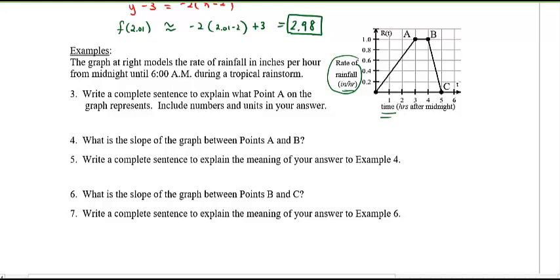So I want you to write complete sentence to explain what point A is on the graph and indicate numbers and units. So if I look at point A, I'm looking at this point right here. We can say that the actual point is 3 comma 1, right? So the point is 3 comma 1, but what does that actually represent? Well, at 3, which would be 3 a.m., what do we know? The y-value is the rate of rainfall. So I'll say the rate of rainfall is 1 inch per hour. Done. So once again, the rate of rainfall is the y component here.